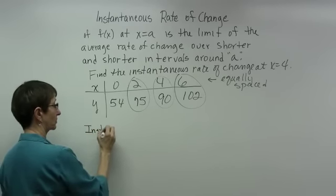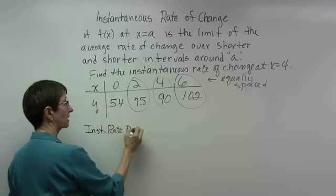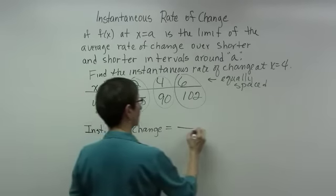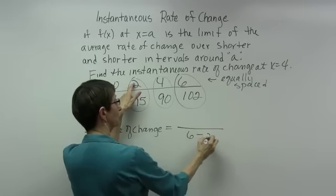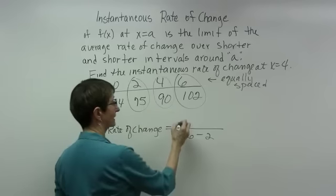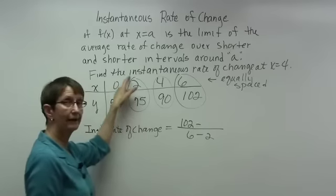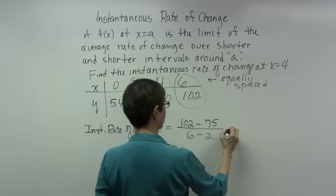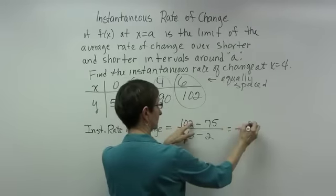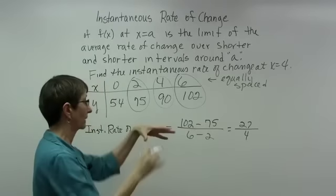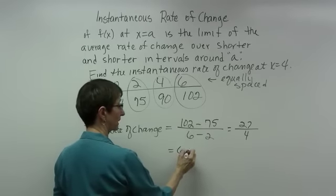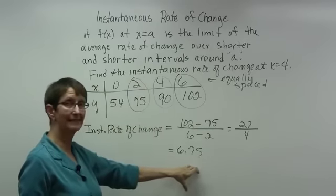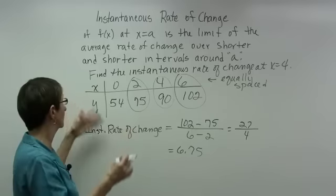The instantaneous rate of change is worked the same way as average rate of change. We compute (6 minus 2) in the denominator and y values (102 minus 75) in the numerator — that gives us 27 over 4. Dividing that out, the instantaneous rate of change at x equal to 4 for this data set is 6.75 y units per x unit.